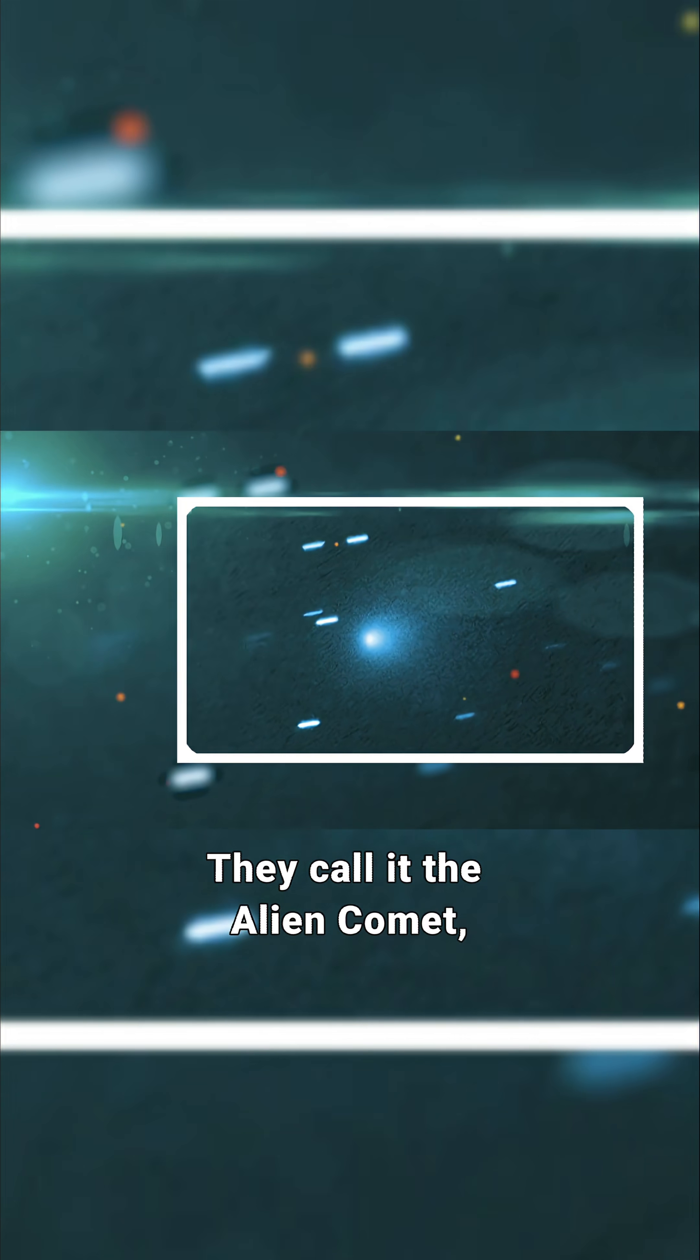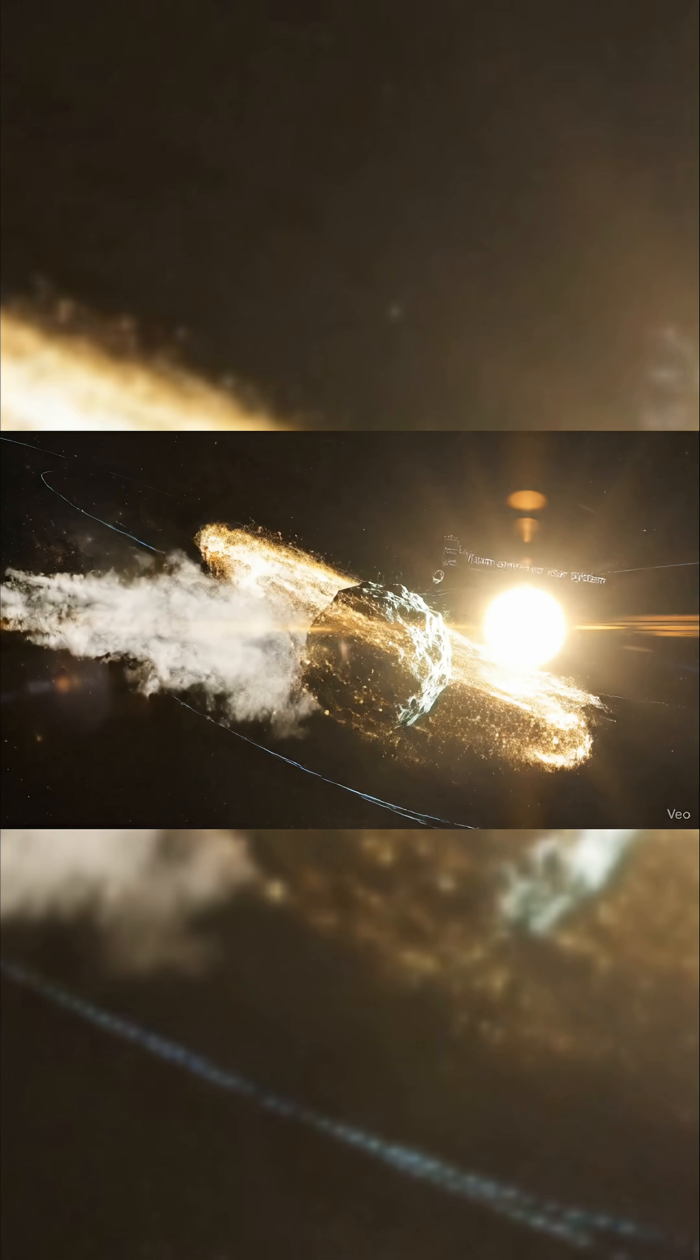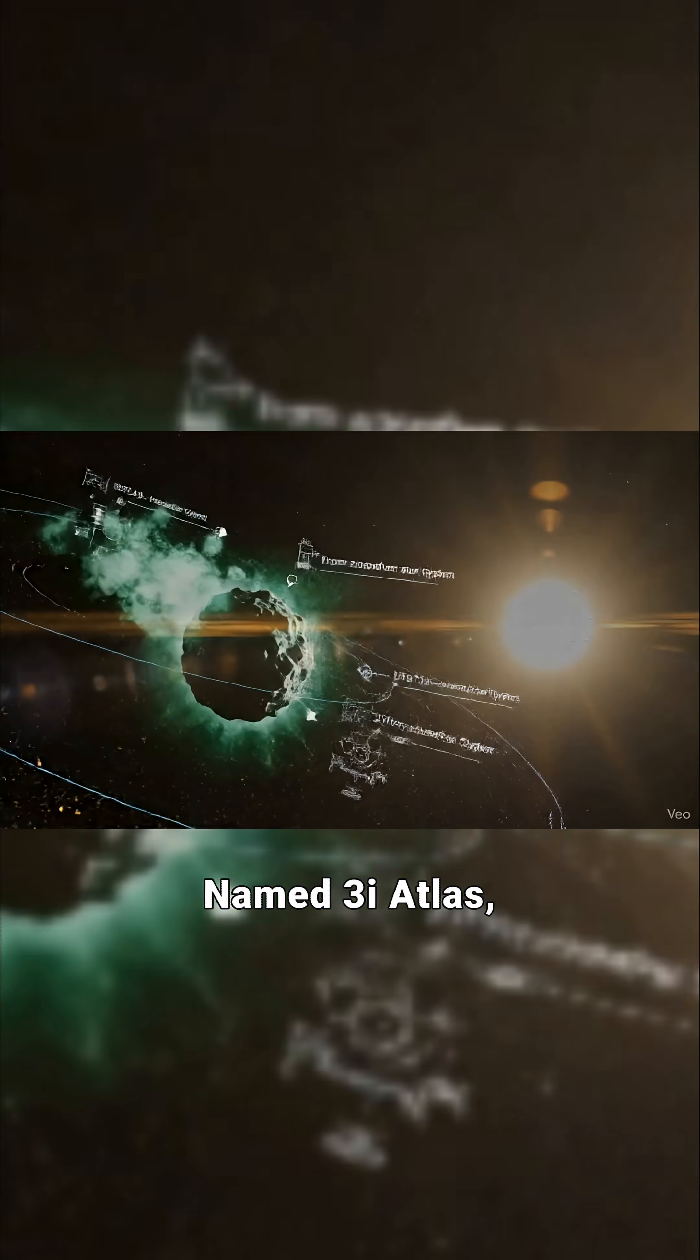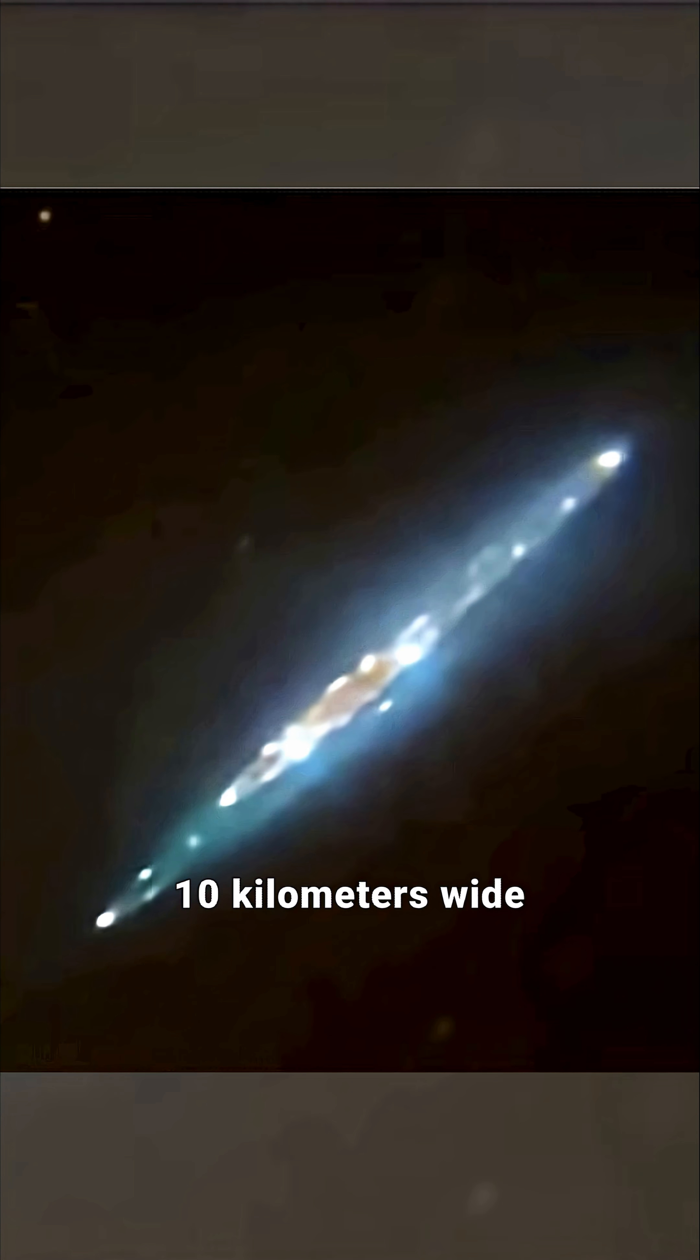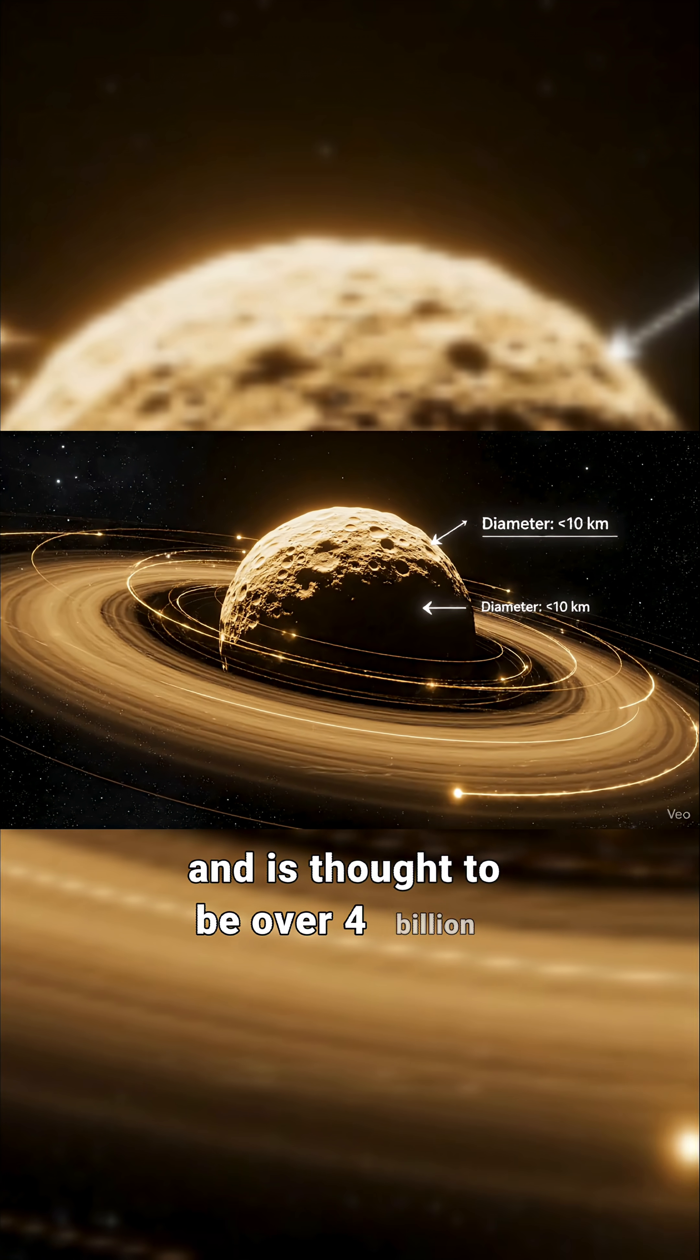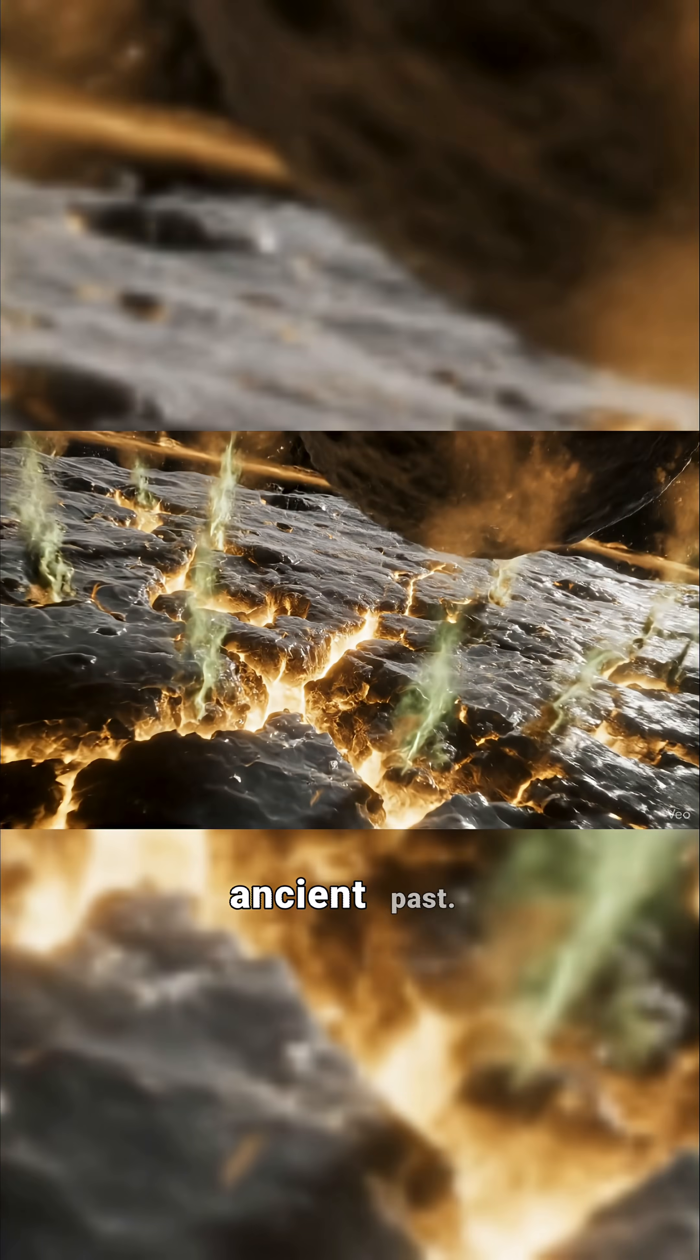They call it the Alien Comet, a mysterious traveler from beyond our solar system. Named 3i Atlas, this icy giant stretches nearly 10 kilometers wide and is thought to be over 4 billion years old, a frozen relic from another sun's ancient past.